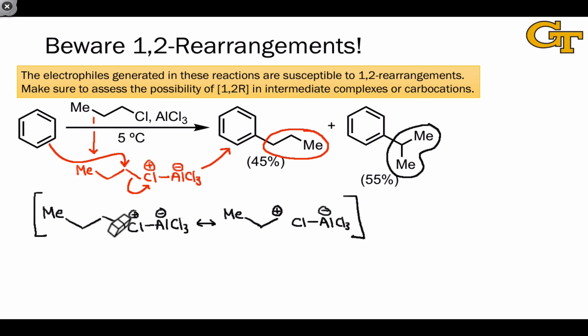These resonance forms also help us understand why 1,2-rearrangements are possible in this complex, and you've really got to watch out for 1,2-rearrangements in Friedel-Crafts alkylations. The key is to pay attention to the complex involved and assess the possibility of 1,2-rearrangement in that intermediate complex or in a carbocation.